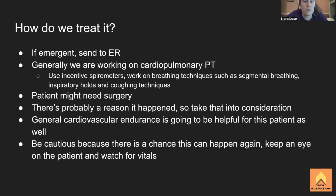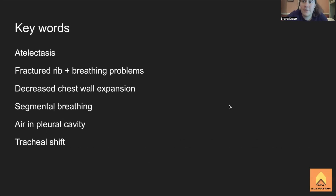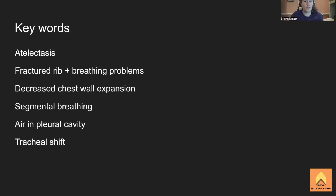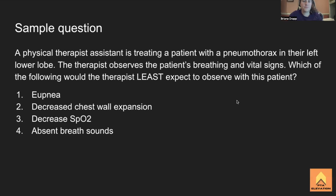Key board exam terms: atelectasis (collapsed lung); pneumothorax (most common type of atelectasis); fractured rib leading to breathing problems; decreased chest wall expansion visible on assessment (one side not expanding); segmental breathing as the primary intervention; and tracheal shift seen on X-ray. Air in the pleural cavity is the definition of pneumothorax. Segmental breathing is a newer addition to the boards.